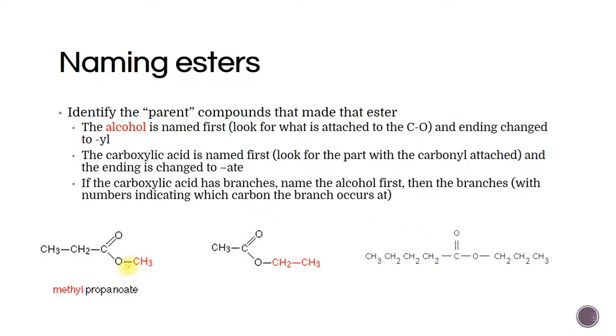To identify which one is the alcohol group we look for this, that O that's trapped between the carbons. So this is the alcohol originally. We named that one first, so this as an alcohol with one carbon would have been called methanol. We take off the OL, may put YL so methyl is that group.